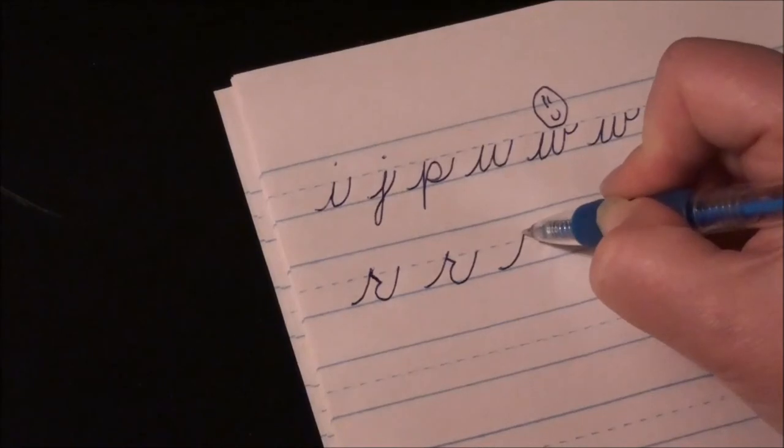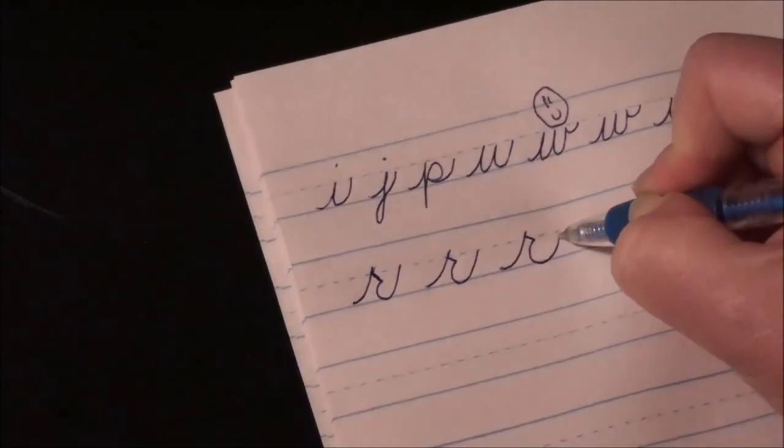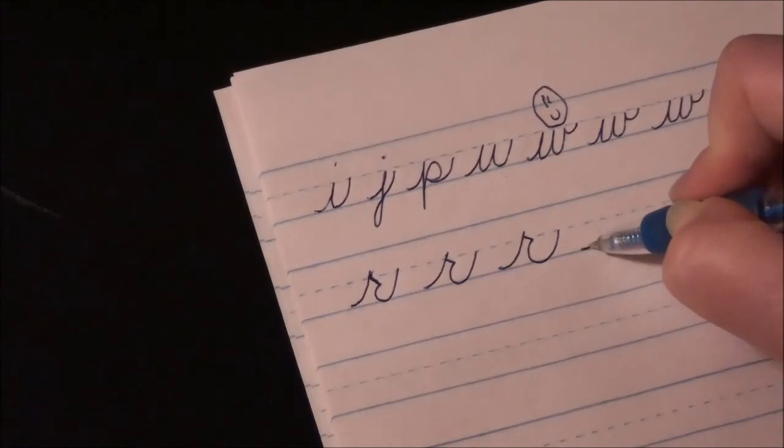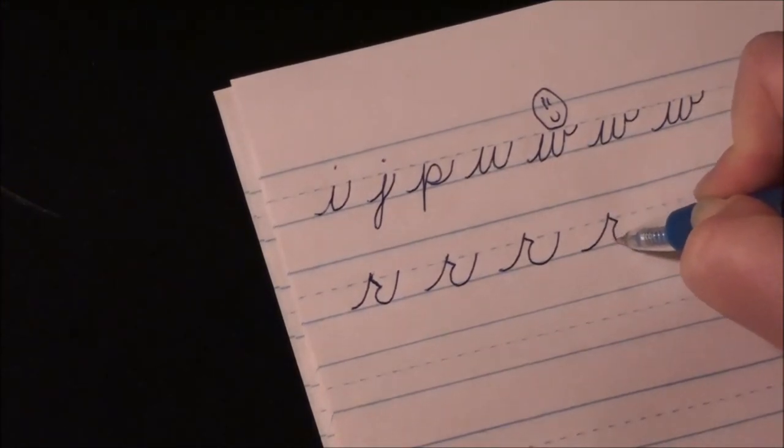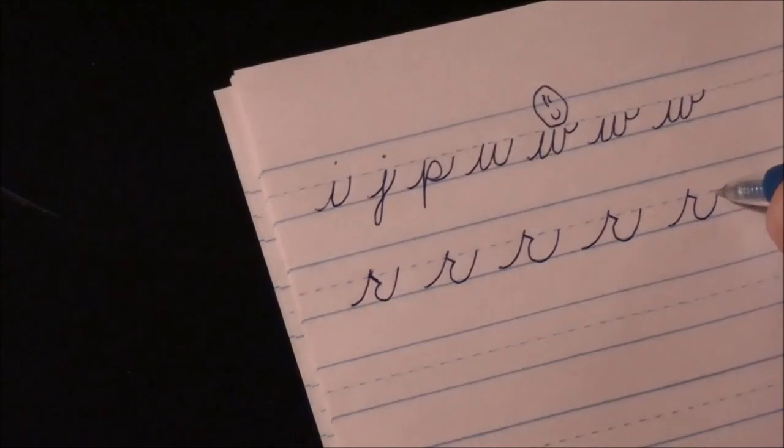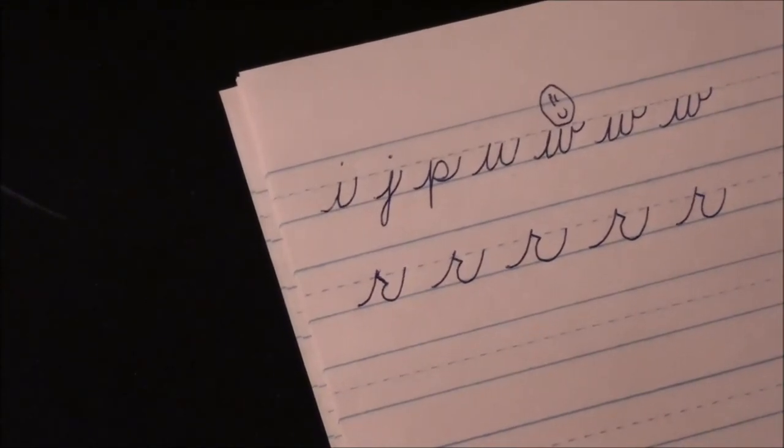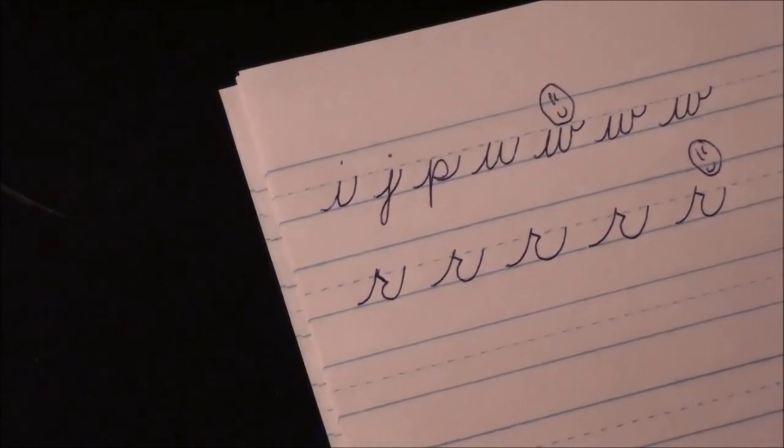Okay, upstroke past the midline, retrace, slant, and down and around for your tail. Upstroke past the midline, retrace, slant, down and around for your tail. Upstroke past the midline, retrace, slant, down and around for your tail. And one more. There we go. And I think I like this one the best. That one just pops for me.